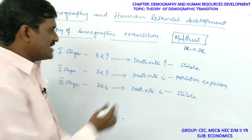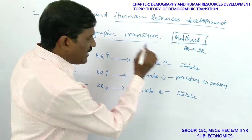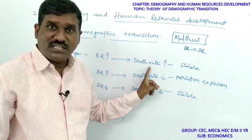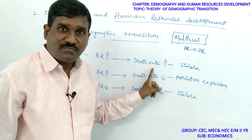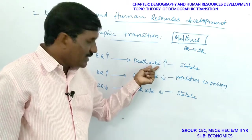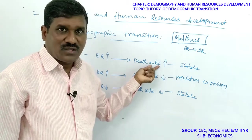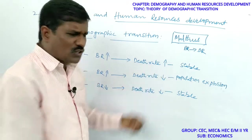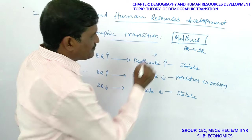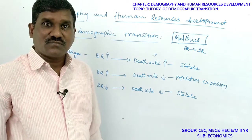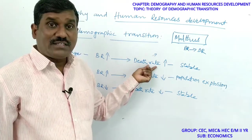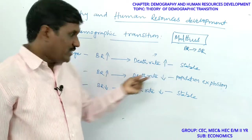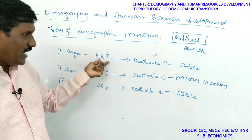The death rate is also very high in the first stage. Why? Because there is no sanitation, no health facilities, no education facilities, and no family planning. Due to lack of medical facilities, most people died from epidemics, so death rate was also very high.